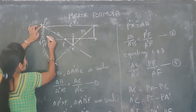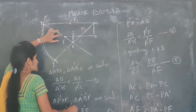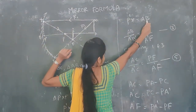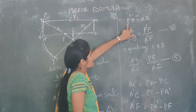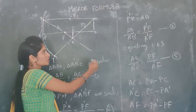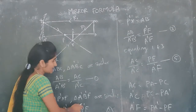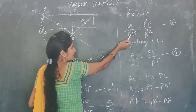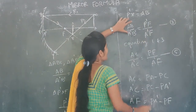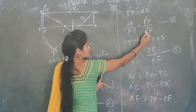From the figure, X P dash is the same size as AB, so P dash X = AB. Substituting this value into equation 2, I can write equation 3 as: AB / A dash B dash = P dash F / A dash F.